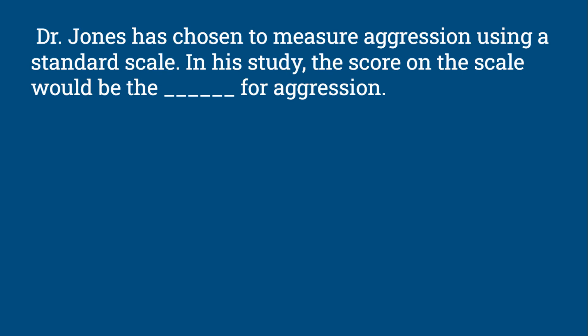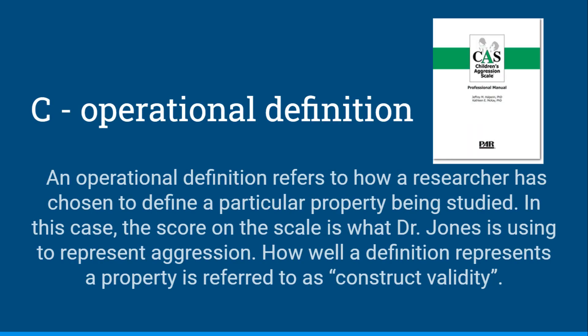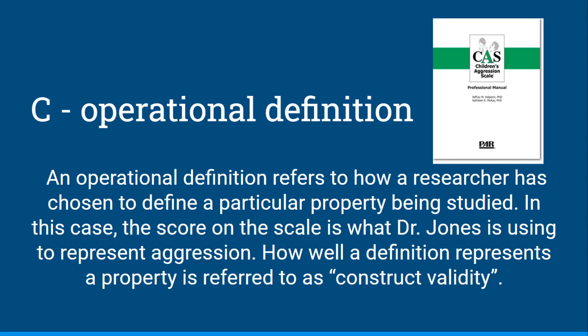Dr. Jones has chosen to measure aggression using a standard scale. In his study, the score on the scale would be the blank for aggression. Would it be the extraneous variable, the control, the operational definition, the sample, or the independent variable for aggression? The score on this scale would be the operational definition for aggression. An operational definition refers to how a researcher has chosen to define a particular property being studied. Since you can't measure aggression directly, Dr. Jones uses the scale score to represent it. How well a definition represents the property is referred to as construct validity.